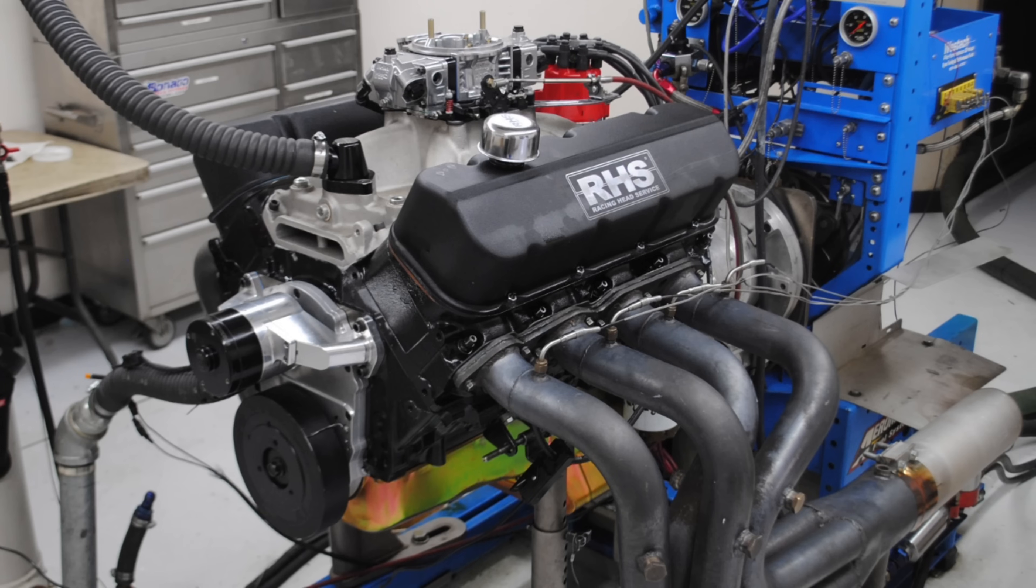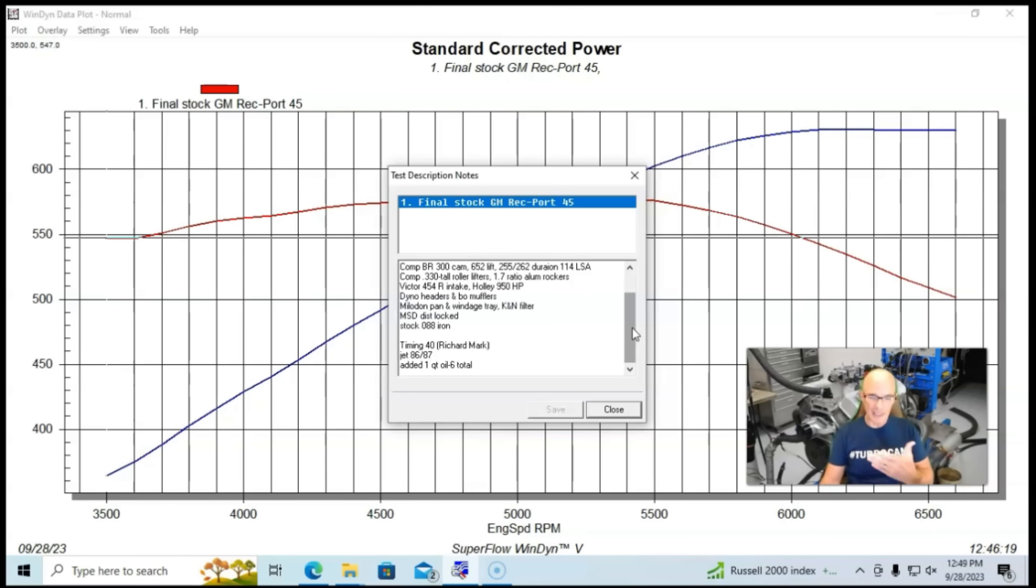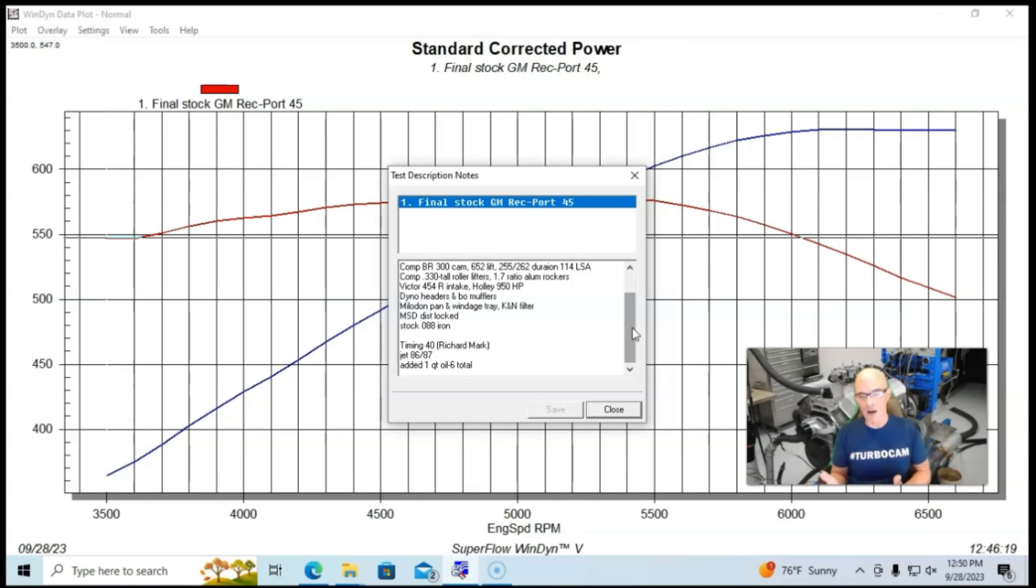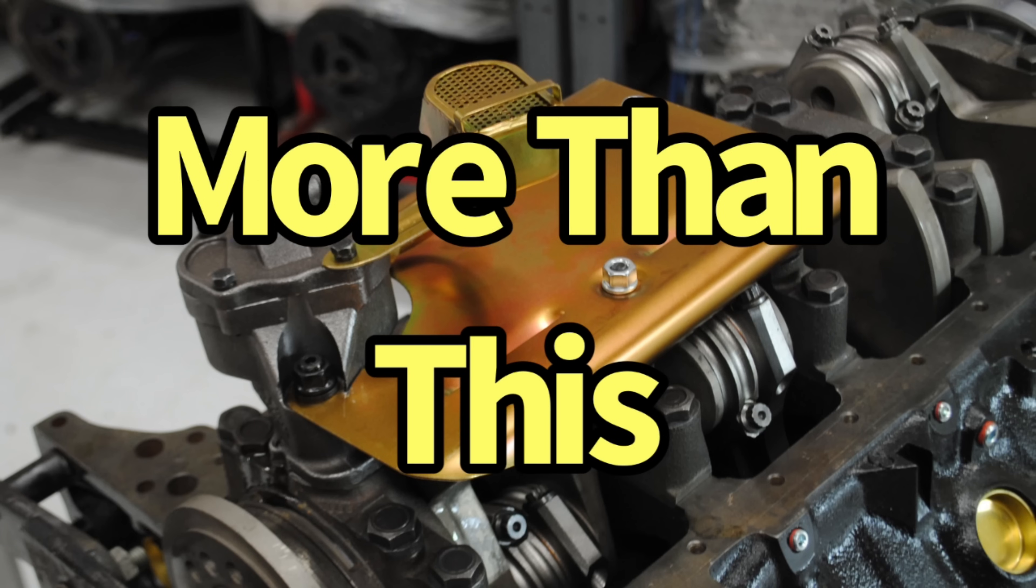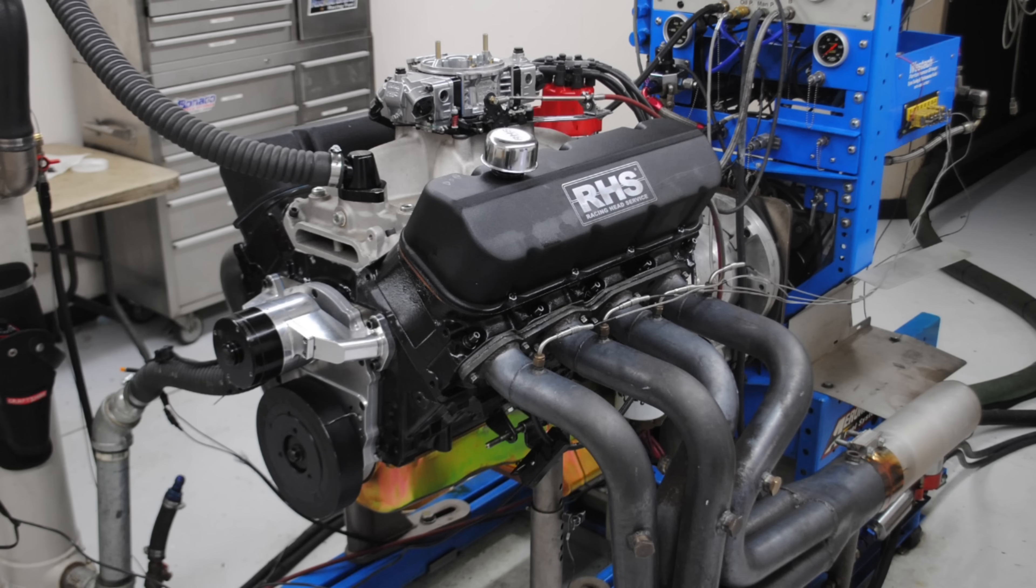It was run in this configuration with a Victor 454, Victor Jr. kind of single plane intake manifold, a Holley 950. We have the dyno headers and MSD distributor. We had a Milodon pan and windage tray, and as always, our Meziere electric water pump. To get things started, we ran it with 088 iron big block Chevy heads, rec port big block Chevy heads. We adjusted timing and air fuel. As we often do with the big block stuff, we adjusted the oil level to make sure that we have the right combination of oil pressure. You'll be able to tell not only in the oil pressure curve but also in power, because it has a pretty good size effect on power.